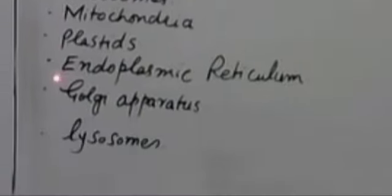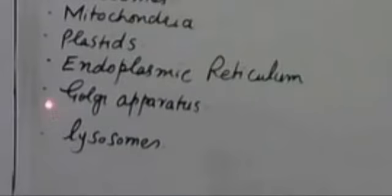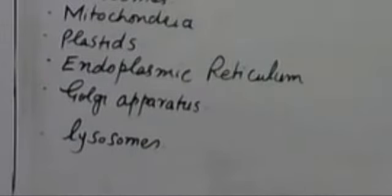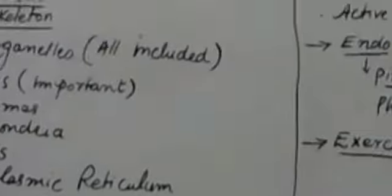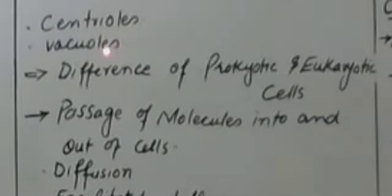Nucleus is an important long question. Endoplasmic reticulum, Golgi apparatus, and lysosome can also appear as short questions, and can be combined into a long question — for example, mitochondria and Golgi apparatus combined. Other organelles include centrioles and vacuoles.